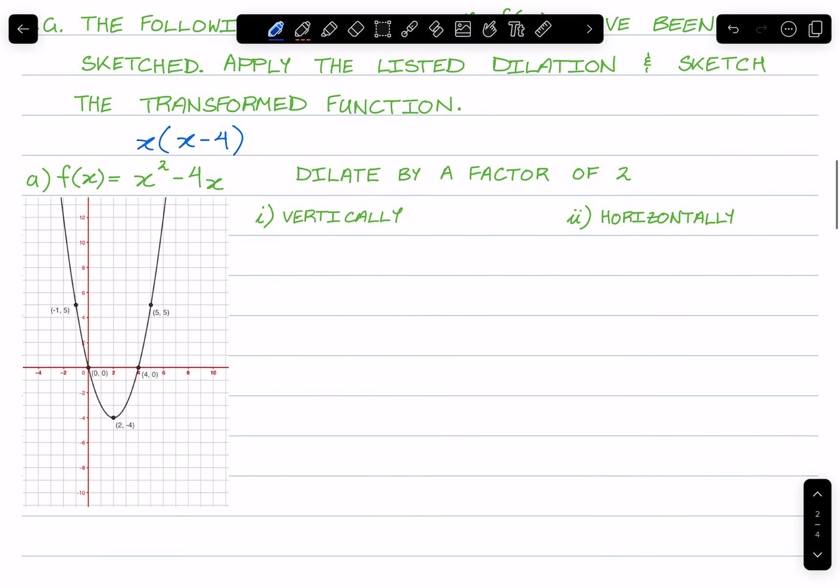Now, a vertical dilation. Firstly, let's think of this as y equals f of x. And since we are vertically dilating, that's going to be y equals y over a.